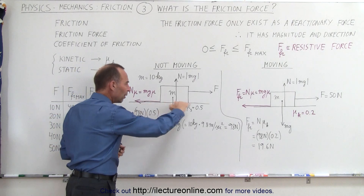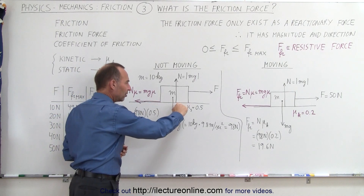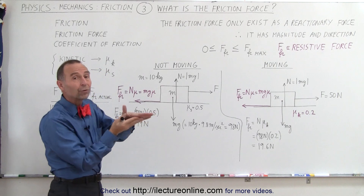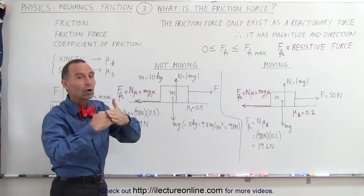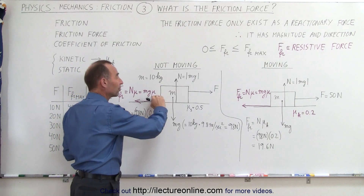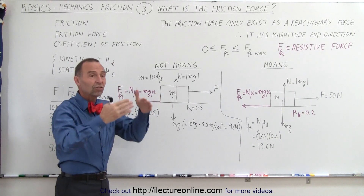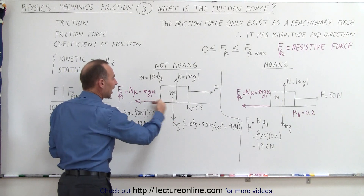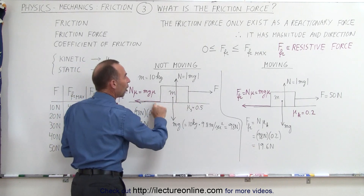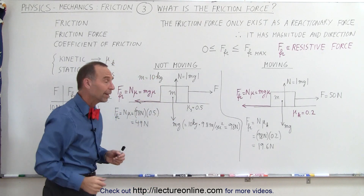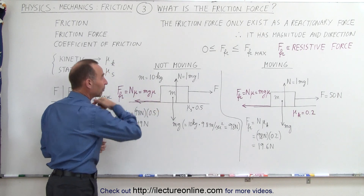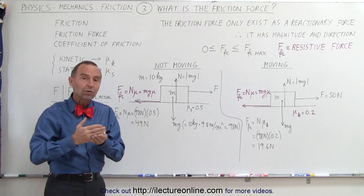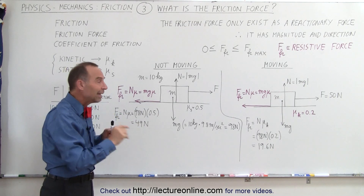Now there's some roughness on the surface of the block and on the surface of the ground, so as the object tries to slide over the other there's going to be a resistive friction force. Even when the object is not moving there's still a resistance to movement, also called the friction force, and it acts in the opposite direction because it's a reactionary force opposing the force that caused it. The direction of the friction force is opposite to the motion the object would have if friction didn't exist.